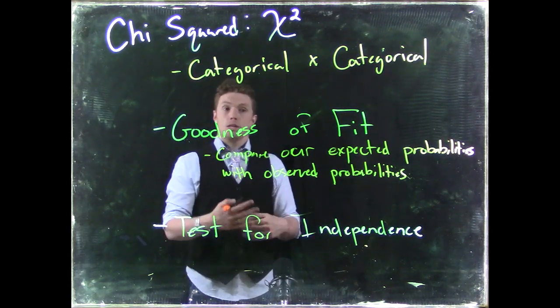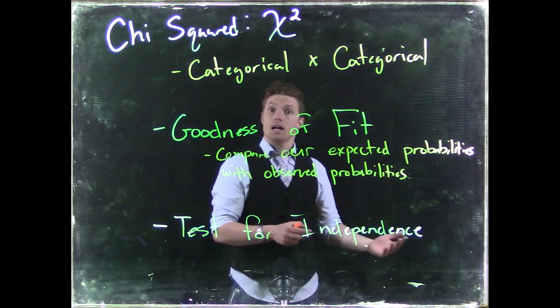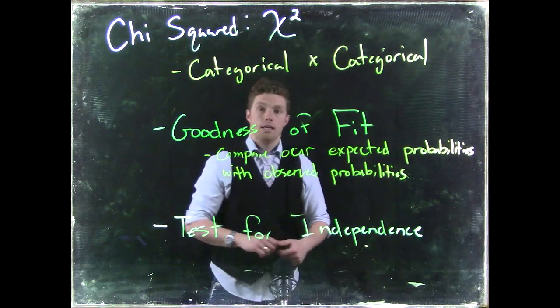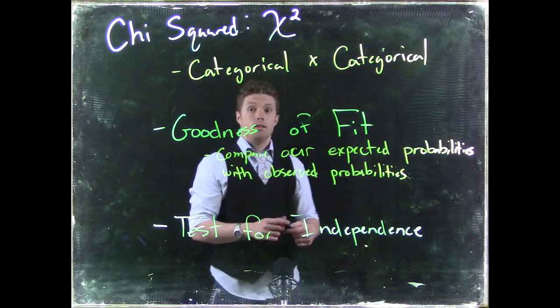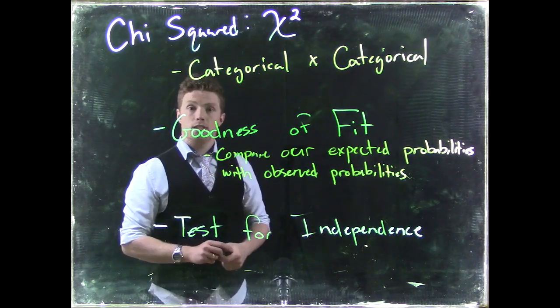And then we could compare what we actually got. So if all of a sudden we see that sixes are rolling way more likely than some of our other numbers, then our goodness of fit could help us understand, are these expected probabilities, do they actually match up with our observed probabilities?